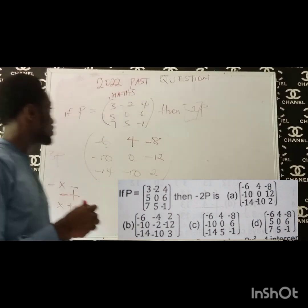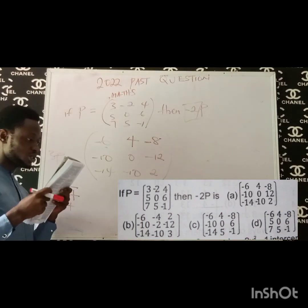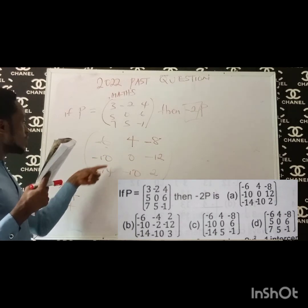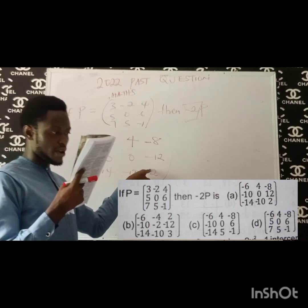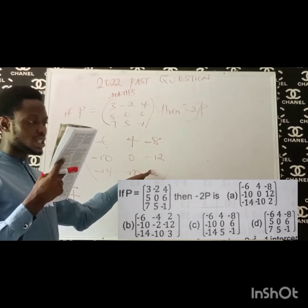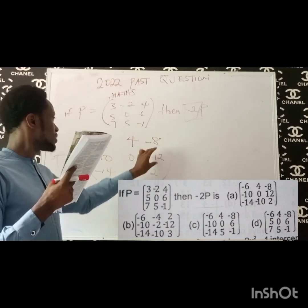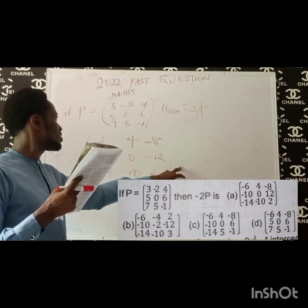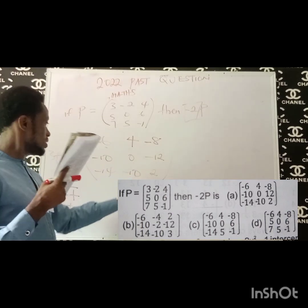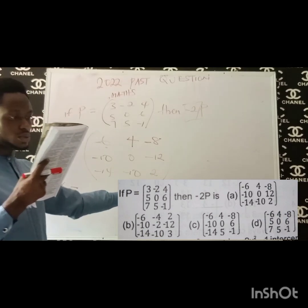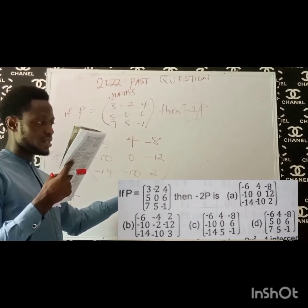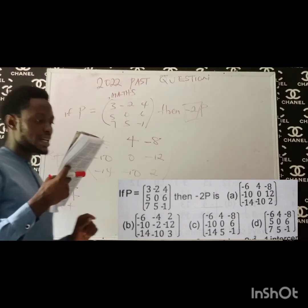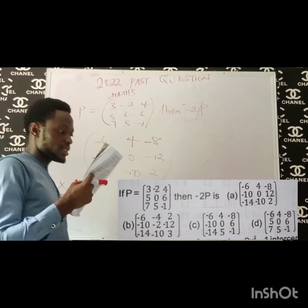So this is the correct answer. You should look very well to make sure there was no discrepancy or difference. We have minus 6, minus 10, minus 14 in one row; 4, 0, minus 10 in another; and minus 8, minus 12 in another. Checking option A — they have plus 12 where we have minus 12, so everything is the same except for that. We have to check other options, but it seems there may be a typographical error, as we should have minus 12, not plus 12.